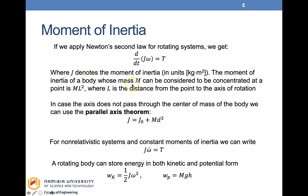The moment of inertia of a body whose mass m can be considered concentrated at a point is J equals m·l², where l is the distance from the point to the axis of rotation. If this condition does not hold, you use the parallel axis theorem to find J, as we also did in dynamics.